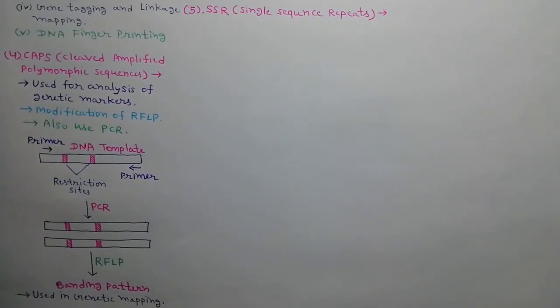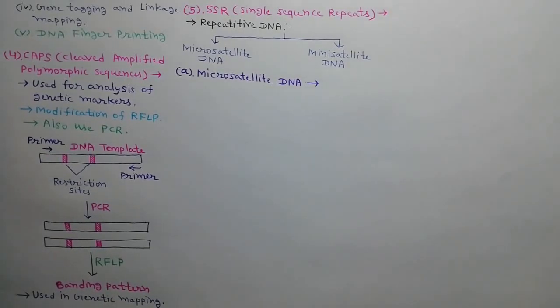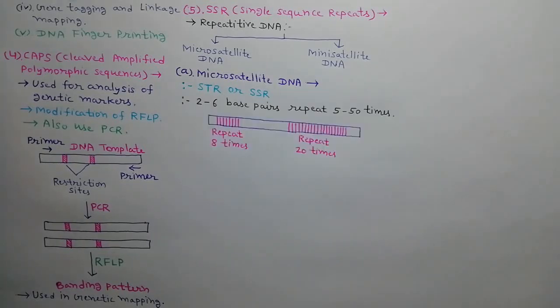Next DNA marker is SSR, means Simple Sequence Repeat. Repetitive DNA is divided into two categories, microsatellite DNA and minisatellite DNA. First of all, we will discuss about the microsatellite DNA. Microsatellite DNA is also called as STR or SSR. STR means Short Tandem Repeats and SSR means Simple Sequence Repeats. Microsatellite DNA is a part of DNA in which 2 to 6 base pairs repeat 5 to 50 times is called as microsatellite DNA.